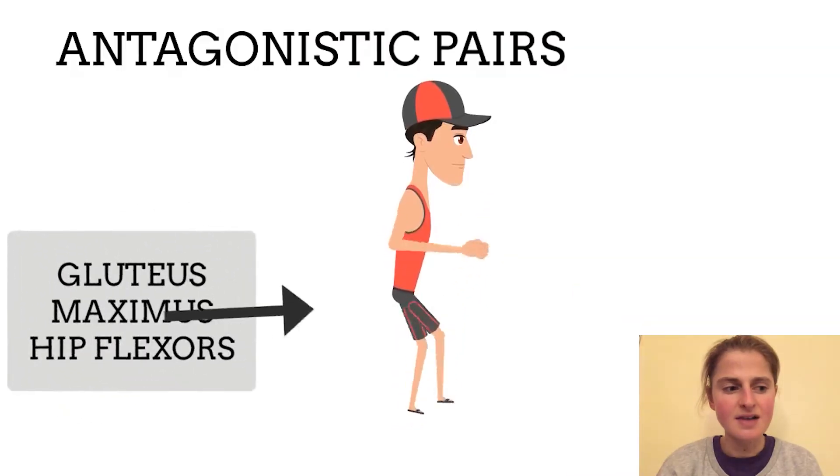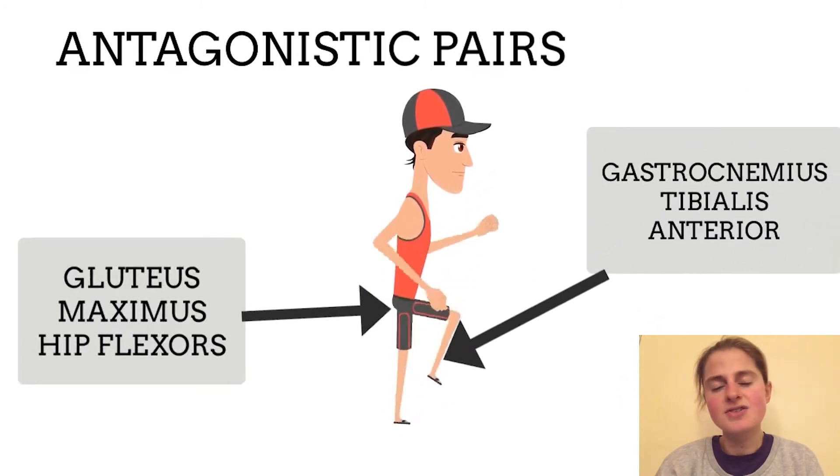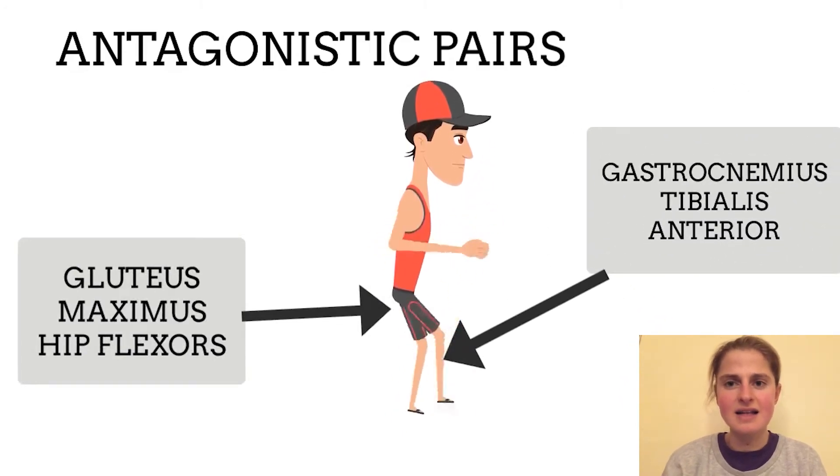Surrounding the antagonistic pairs are muscles which support and stabilise the origin, so only the insertion point will move. These muscles are called fixators and synergists. For example, your obliques act as fixators for the hip flexors. Examples of antagonistic pairs are the gluteus maximus and hip flexors, and the gastrocnemius and tibialis anterior.